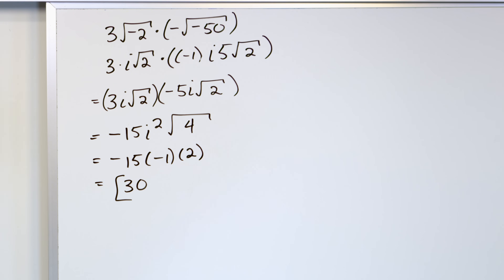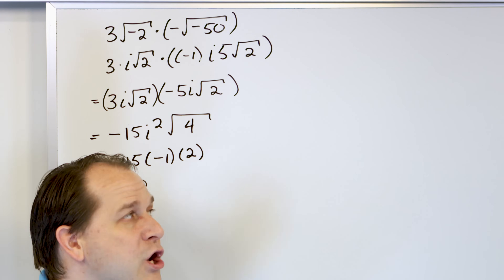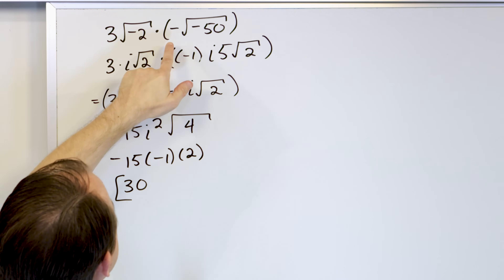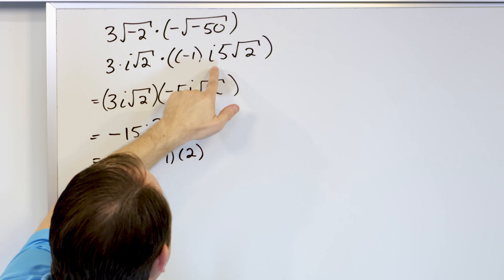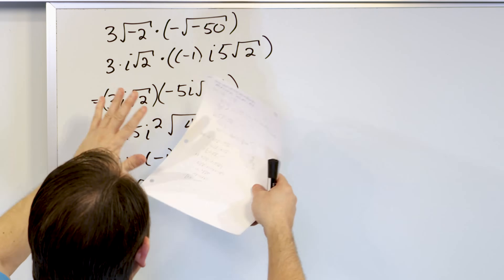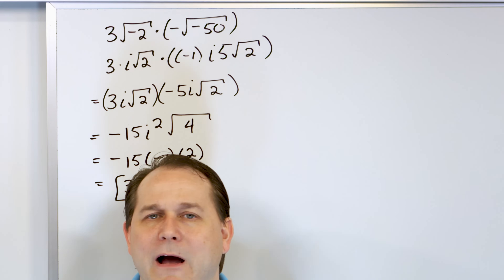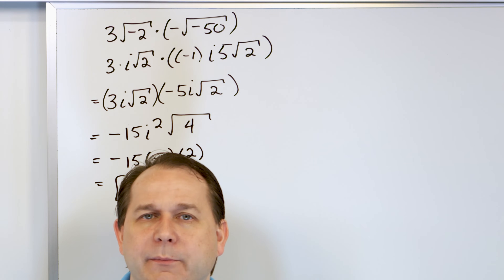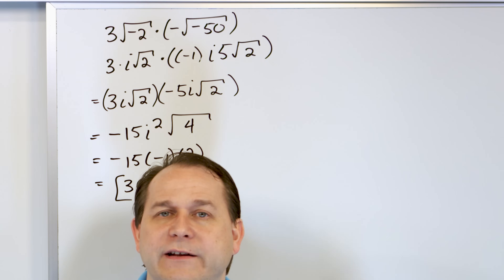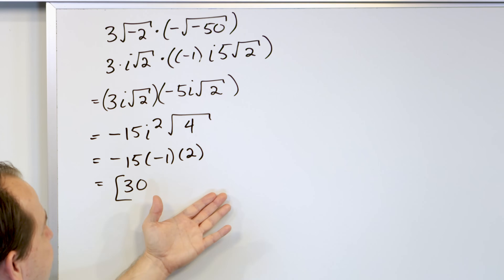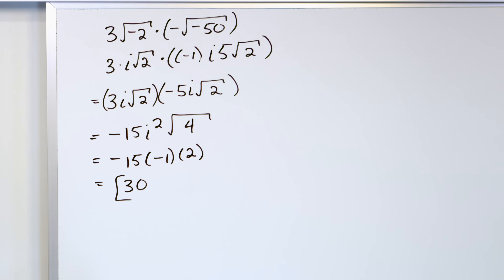It looks difficult, but the secret to doing all of these problems is to write down every single step. Notice I didn't skip any steps — I didn't try to combine the i, 5 root 2, and the negative 1 all in the same step. When you solve enough of these problems, you'll find that mistakes with imaginary numbers always come from trying to do too many things in one step. Write down your steps — it's not that much — so you don't get the wrong answer.